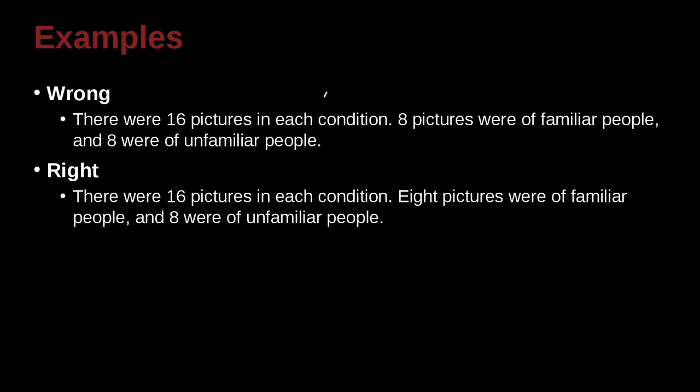There were 16 pictures in each condition. Eight pictures were of familiar people, and eight were of unfamiliar people. So in this case, this looks pretty straightforward, right? Eight of this type, eight of that type, 16 of that type. Well, we have separate sentences, first of all. So this is a sentence here. That's okay, but what about the second sentence here? We have eight and eight. You would think that you should write the number, but remember this special case of beginning of sentence. Beginning of sentence, we must spell it out.